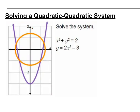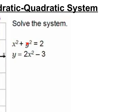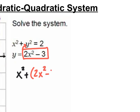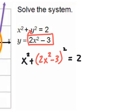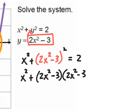Let's solve this system. I have the circle equation x squared plus y squared equals 2, and the quadratic y equals 2x squared minus 3. Because y is isolated, I'll substitute 2x squared minus 3 into y of the circle equation. Rewriting: x squared plus (2x squared minus 3) squared equals 2. Since squaring means multiplying twice, I rewrite as x squared plus (2x squared minus 3)(2x squared minus 3) equals 2.